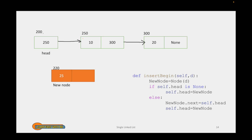After assigning the data, we need to assign the default value for the new node's next. After creating this new node, we verify whether the list is empty or not. If the list is empty, we directly make head hold the value 220, so we have only one node in the linked list. But in this given case, head is already holding the value 250, which means this list is not empty, so we go to the else part.